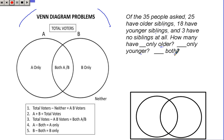Here's how you do this problem. You're going to go through the steps. Step one, you take the total voters, that would be our 35 people, and subtract the neithers, the people that did not vote for either one. So I'm going to show that work right here.